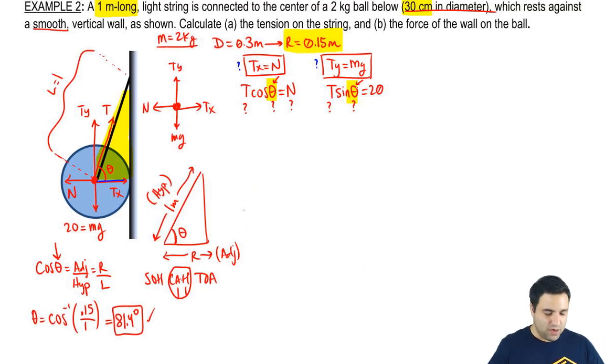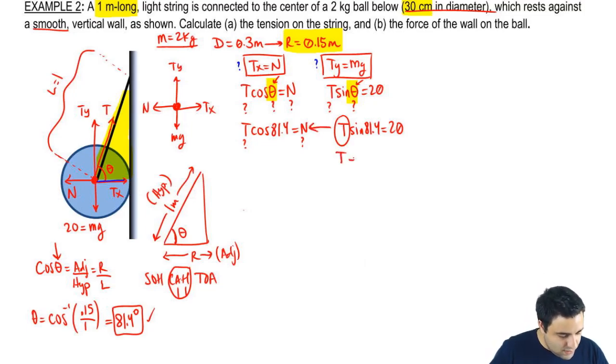And that's going to sort of unlock things. So T cosine of 81.4 equals N. I'm still missing 2 here, so I'm kind of stuck. But notice that here, T sine of 81.4 equals 20. You only have 1 unknown. So I'm going to be able to find T here and plug it over here. So T equals 20 divided by the sine of 81.4. And if I do this very carefully, I get that this is 20.2 newtons.